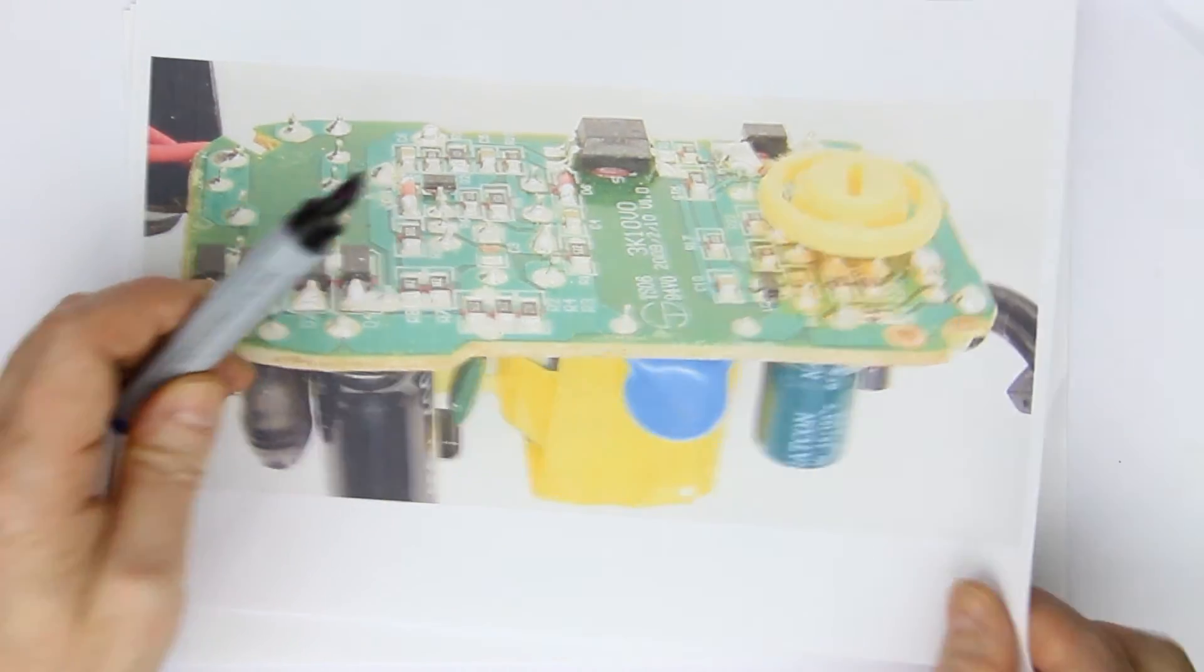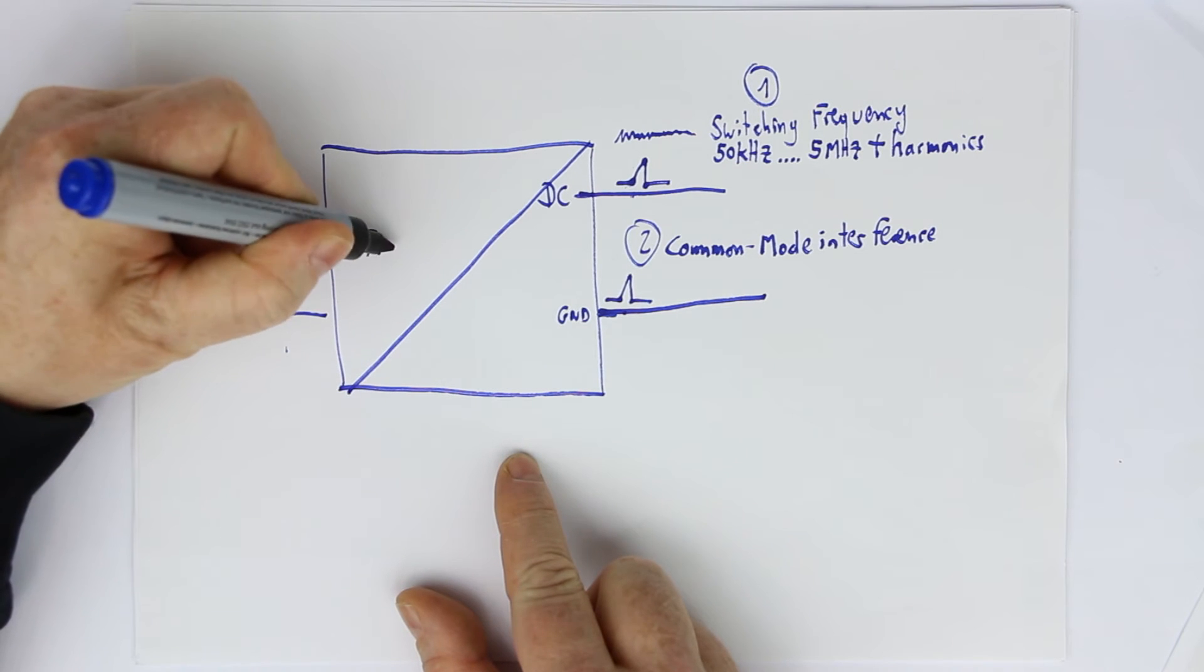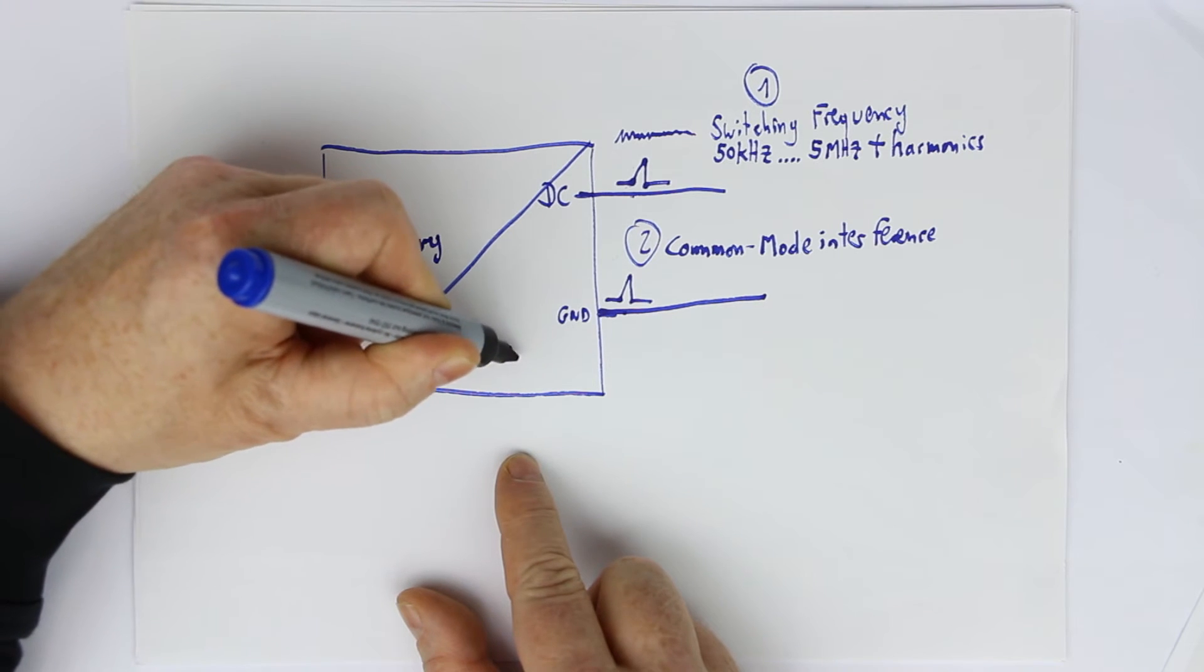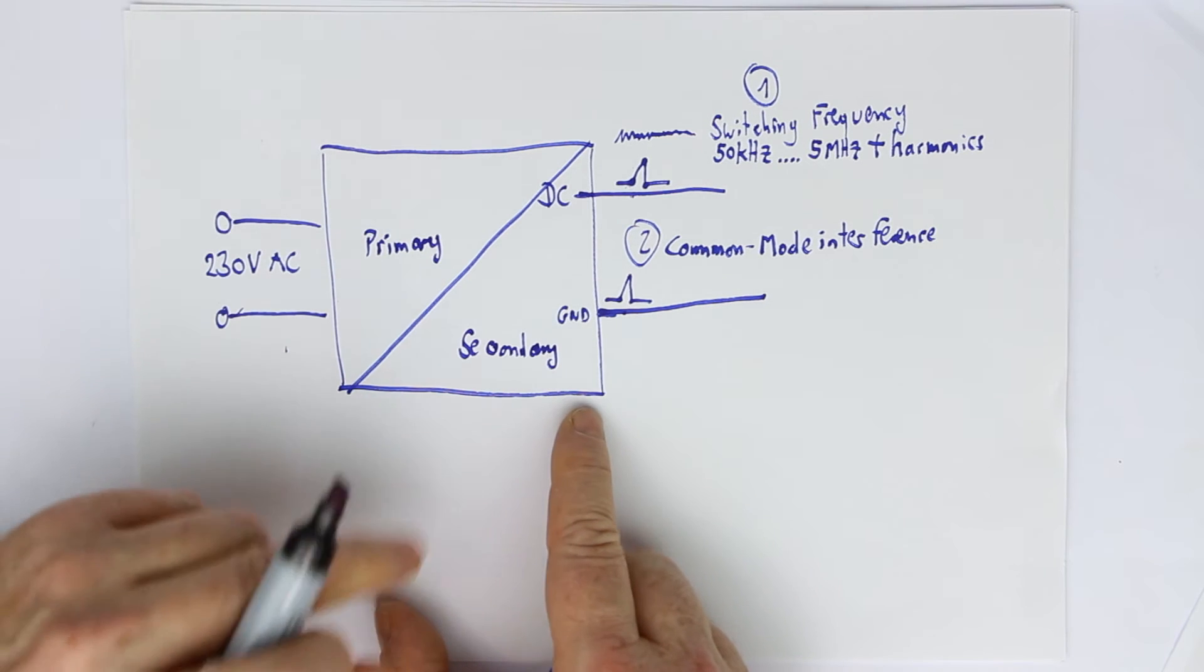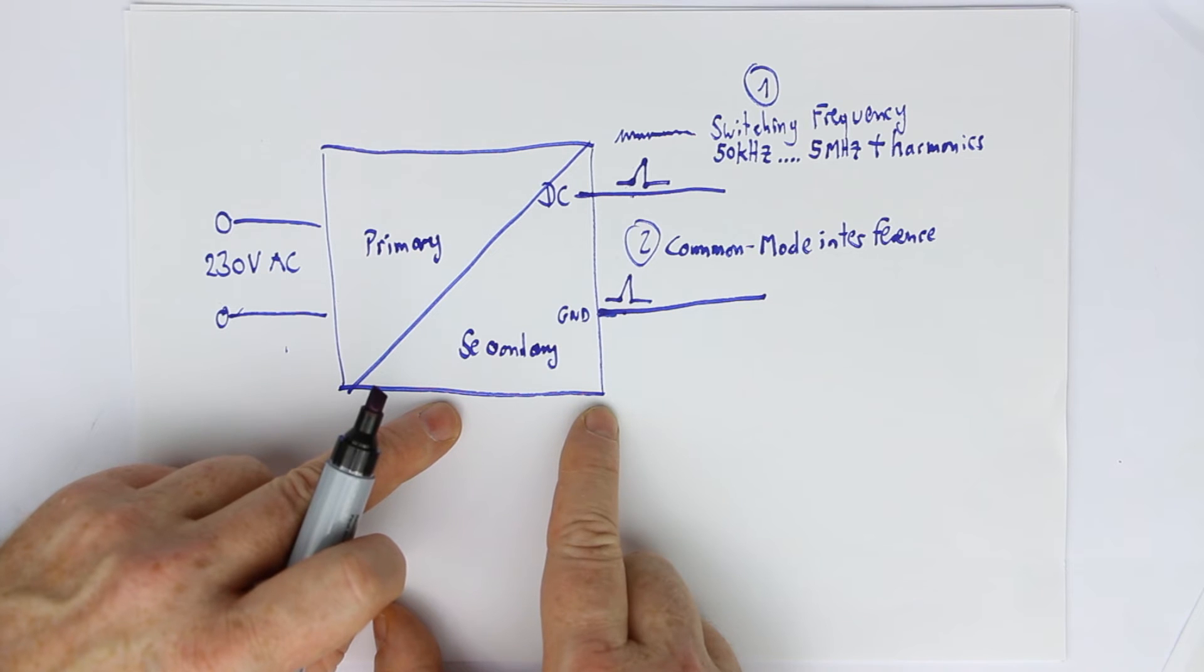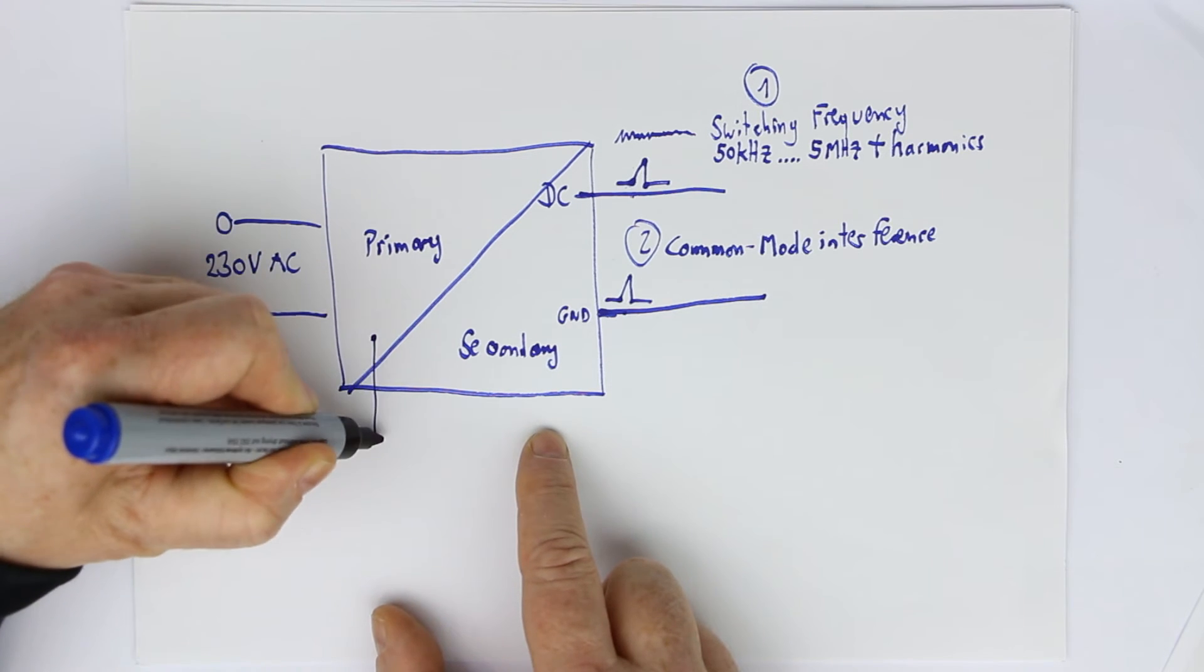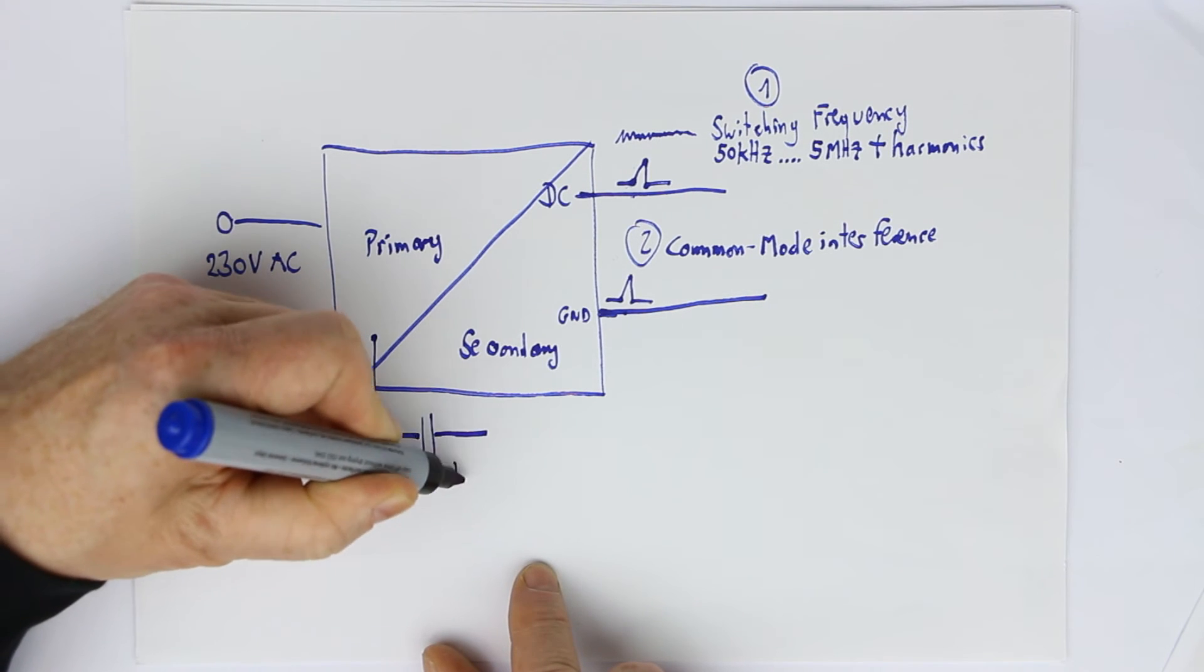Now, what does this mean? Let's suppose we have here the primary side of the switch mode power supply and the secondary side. When you think that you get away with the 50 or 100 hertz hum from linearly regulated power supply, there's one catch. If you have a capacitor, in this case 2.2 nanofarads, which bridges the primary and secondary side...